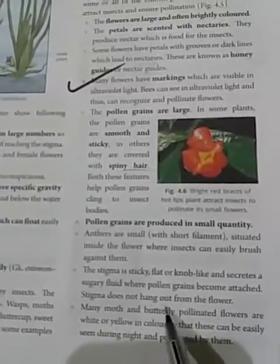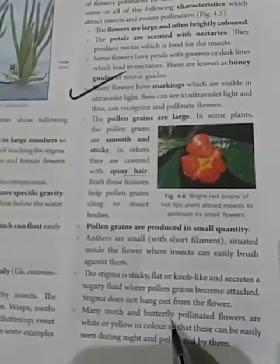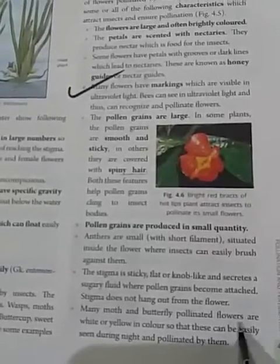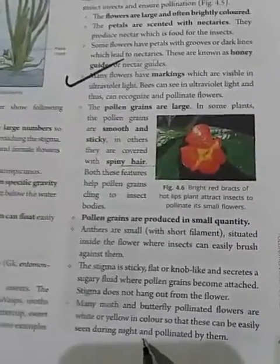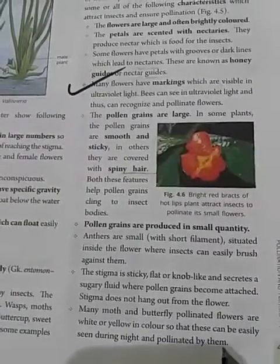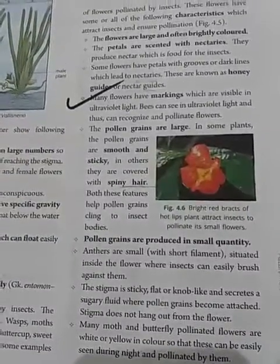The stigma does not hang out from the flower. Many moth- and butterfly-pollinated flowers are white or yellow in color so they can be easily seen during the night and pollinated. This means entomophily also occurs at night.